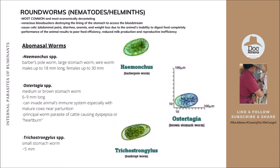For roundworms, we will discuss parasites based on their predilection site: abomasal or stomach worms, small intestinal worms, and large intestinal worms. For abomasal worms, we have Haemonchus species, or the barber's pole worm, also called the large stomach worm or wire worm. Males can be up to 18 millimeters long, while females can be up to 30 millimeters long. Haemonchus or barber's pole worm is really the biggest problem of goats when it comes to internal parasitism.